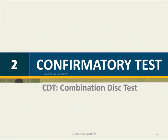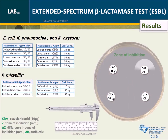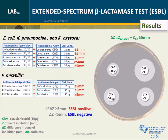Confirmatory test — Combination Disc Test (CDT) results: using a ruler or caliper, measure the zone of inhibition for each disc and its counterpart with clavulanate. Calculate the difference delta Z between the zone of inhibition for a given antibiotic and its counterpart with clavulanate. Compare delta Z with CLSI breakpoints shown here. If delta Z is greater than or equal to 5 mm, then it is ESBL positive; if not, then it is negative.